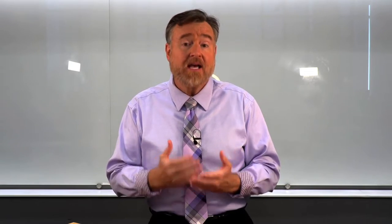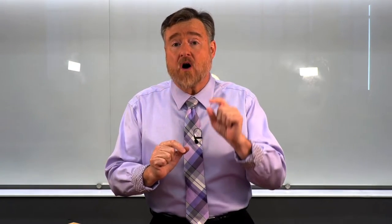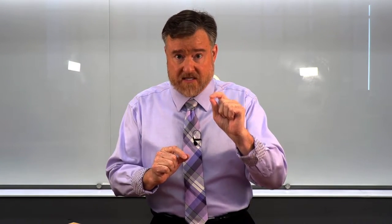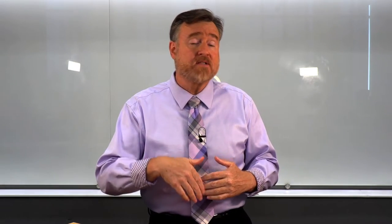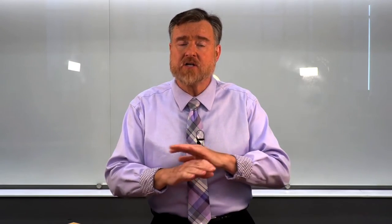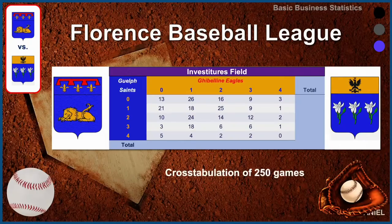The teams are pretty well matched, and so the scores always range between zero and four. Sometimes the Eagles will score four and the Saints will score two. Sometimes the opposite occurs. We're going to look at the cross tabulation of all of that data — here's what it would look like.